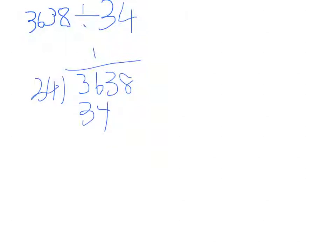And I know that there are one hundred 34s in 3638. So, 34 times 100 equals to 3400, and there will be 238 books will be left.